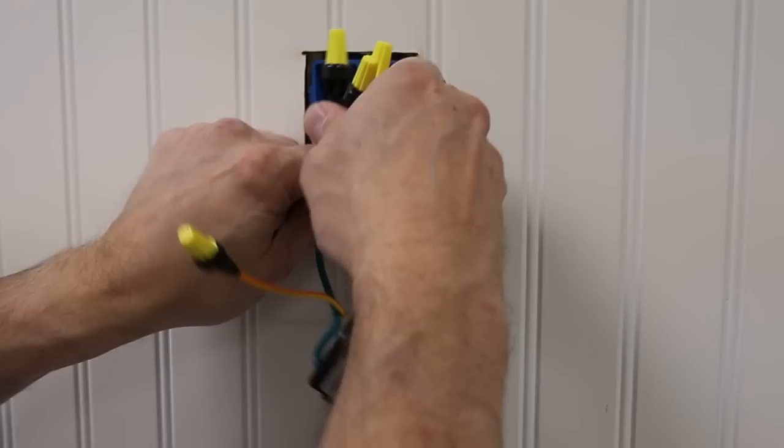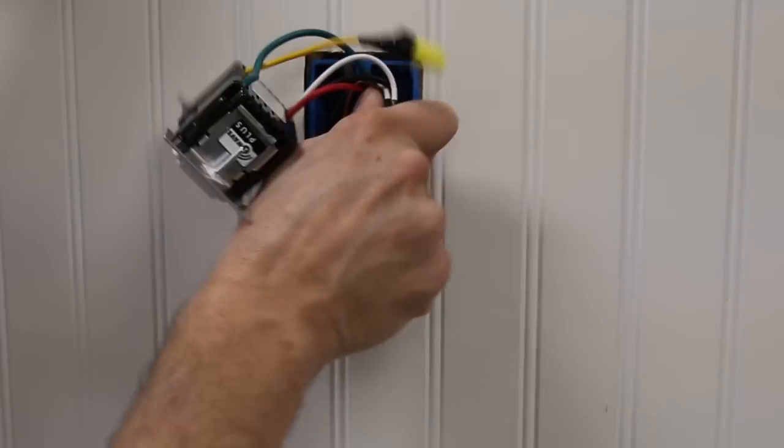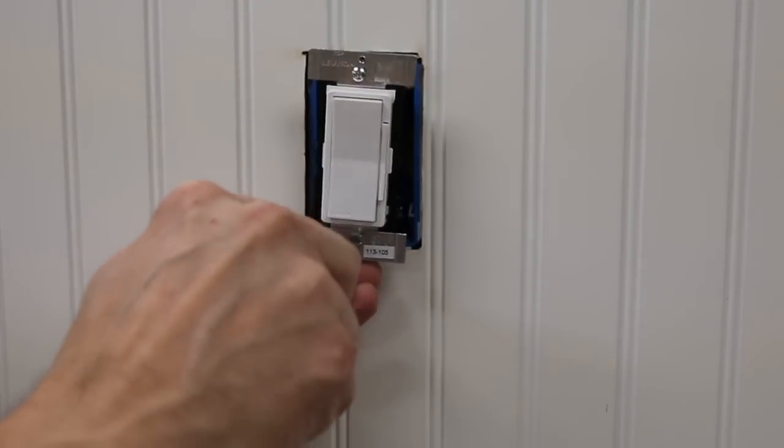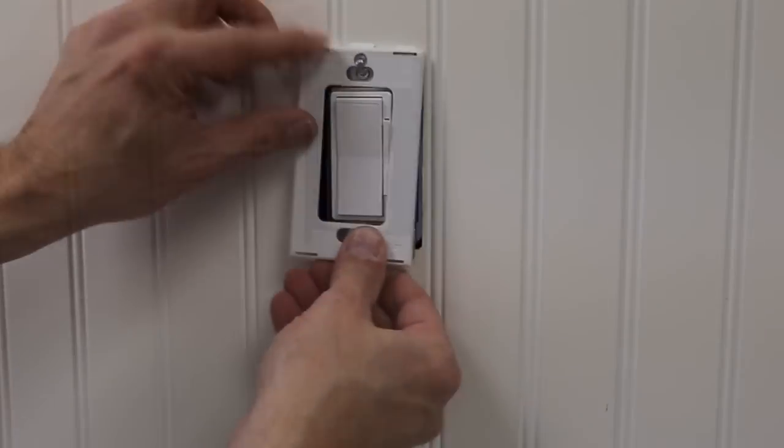The device is now terminated. Gently bend the wires and push them into the wallbox. Screw in the mounting screws in the wallbox mounting holes. Install a wall plate.